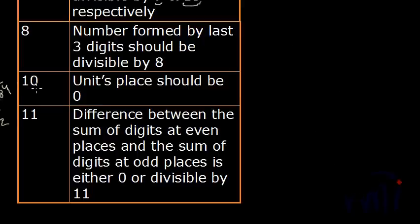Now we will learn the divisibility rule of 10, and it's very simple. It says the unit place should be 0. Any multiple of 10 will have 0 at the unit's place. It is the simplest divisibility rule.